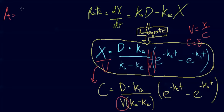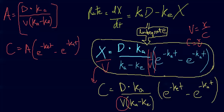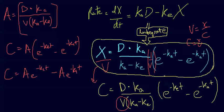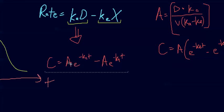We define A as D·ka / (V·(ka − ke)), so the full equation simplifies to C = A·e^(−ke·t) − A·e^(−ka·t), or distributed: C = A·e^(−ke·t) − A·e^(−ka·t). This is the key equation we'll work with.